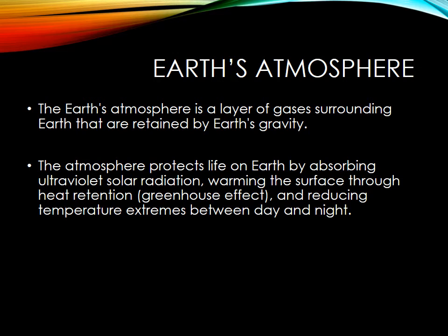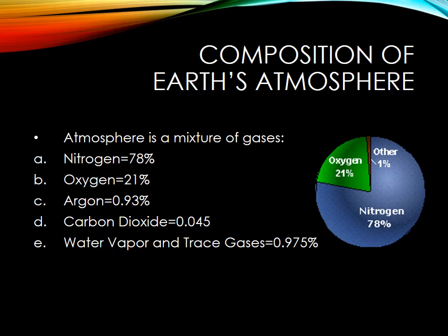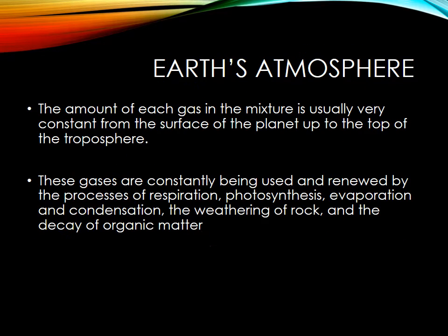We wouldn't be able to survive on Earth without the atmosphere. Earth's atmosphere is made of lots of different gases. Most people think it's mainly oxygen because we need oxygen to breathe, but that's not true. It's actually 78% nitrogen and 21% oxygen, and then a mixture of several other gases which include argon, carbon dioxide, water vapor — which is little water droplets living in the air — and various other gases.